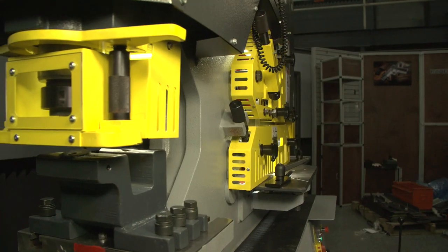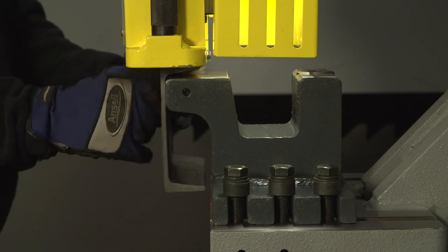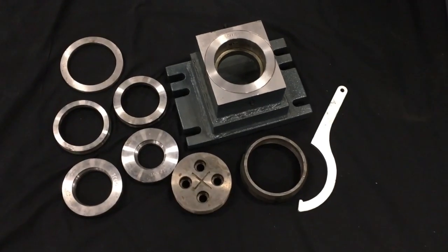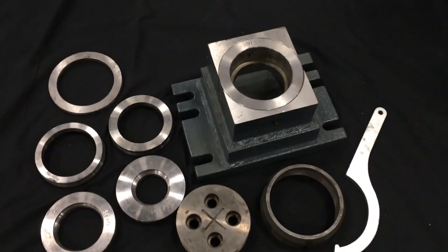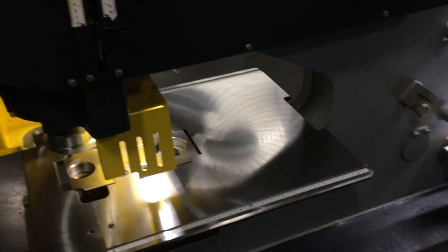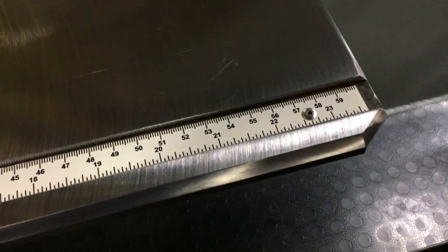The optional channel web die holder allows for the operator to punch the leg or the web of the C channel. The oversized punching kit is also available for punching larger diameter holes up to four and five sixteenths of an inch diameter. For the oversized punch kit an optional oversized table is also available.